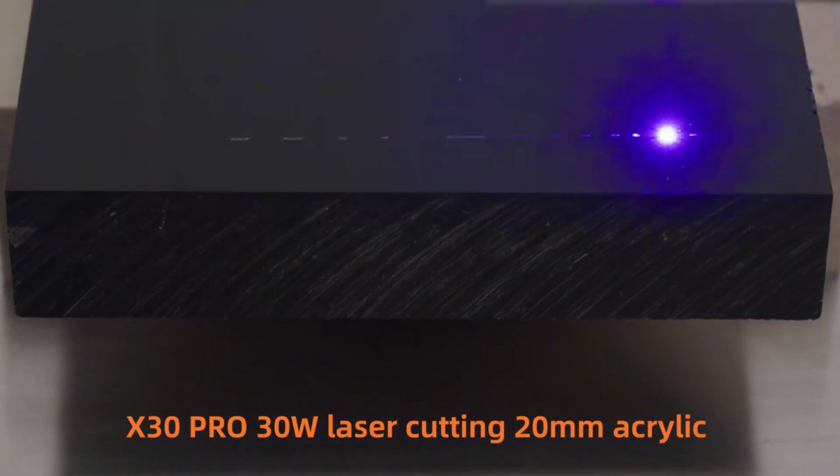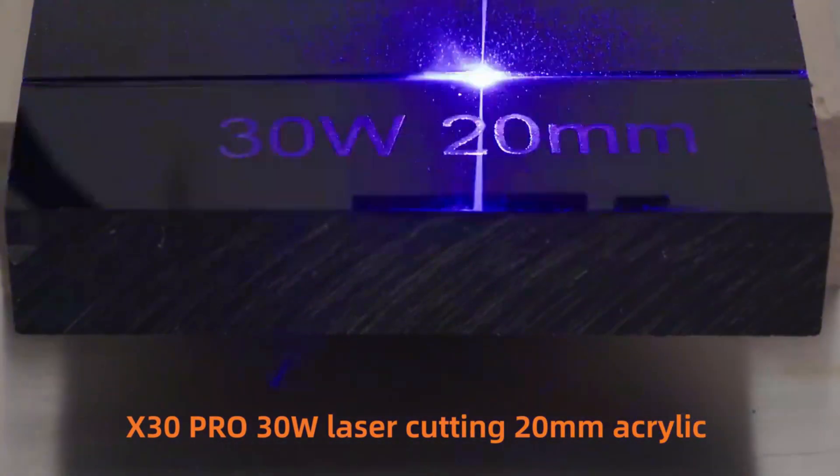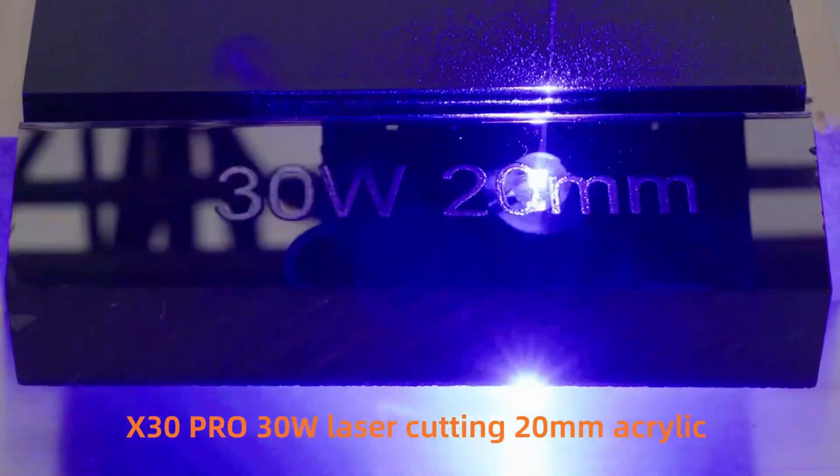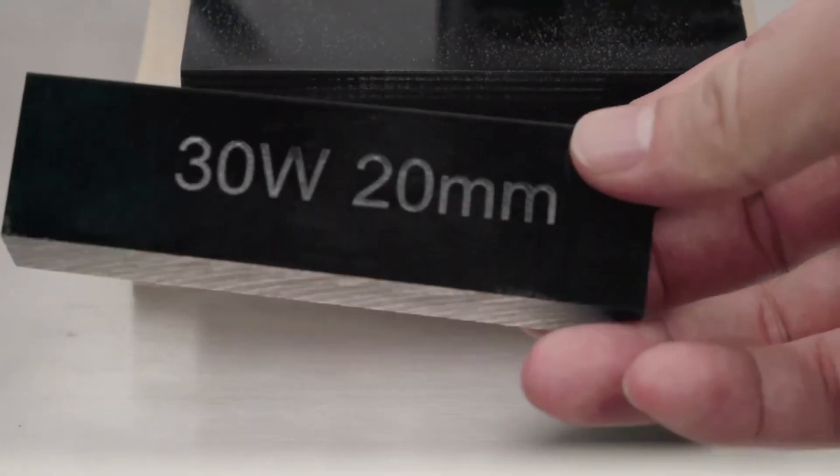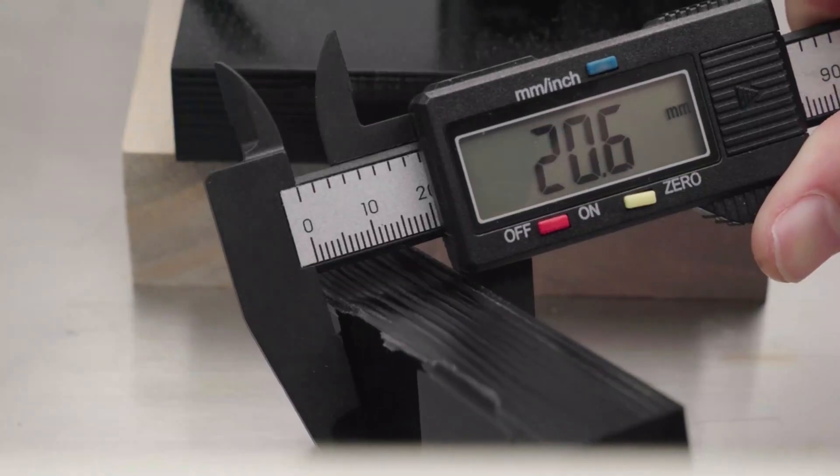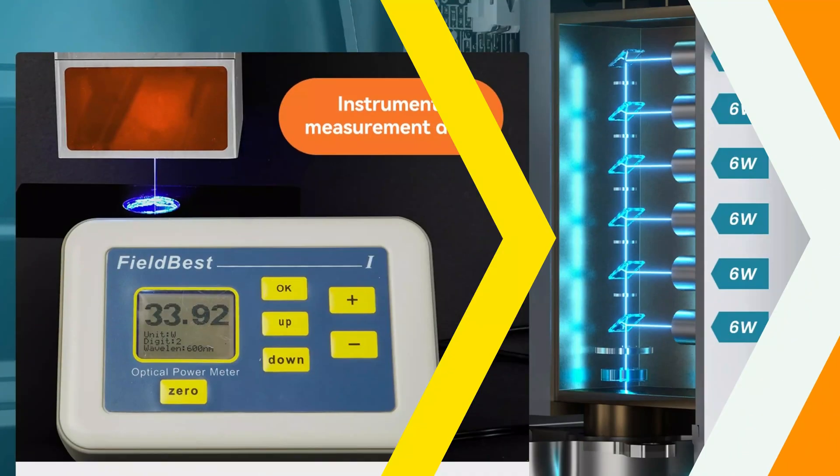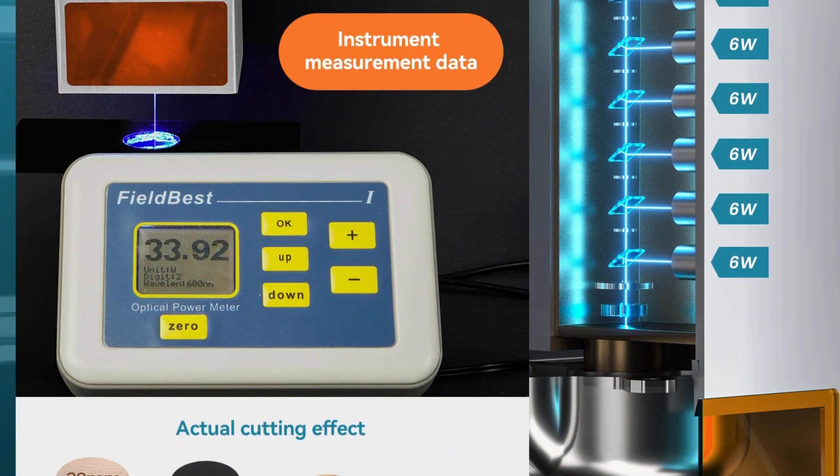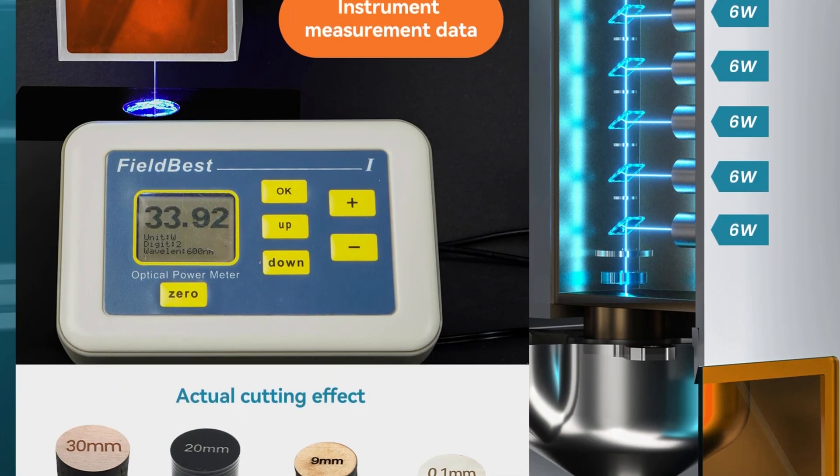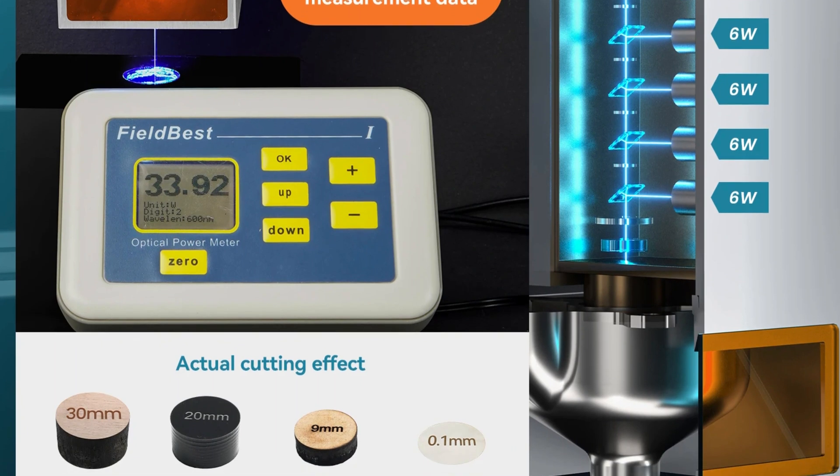Its built-in double F30 Pro air assist kit optimizes cutting accuracy and quality. The X30 Pro features a 32-bit motherboard with a 256-bit color scale, resulting in finer engraving and higher contrast. Its user-friendly mobile app allows for easy control and customization of engraving designs.